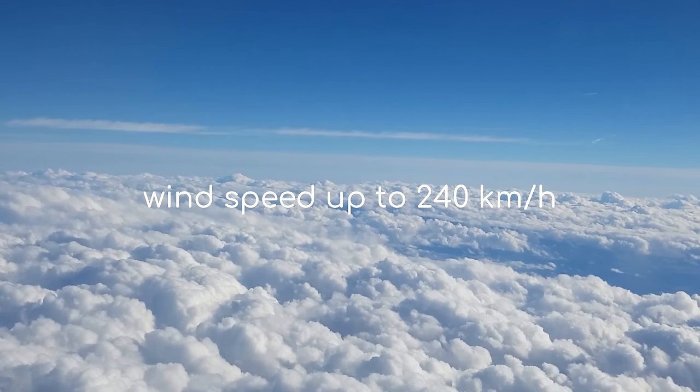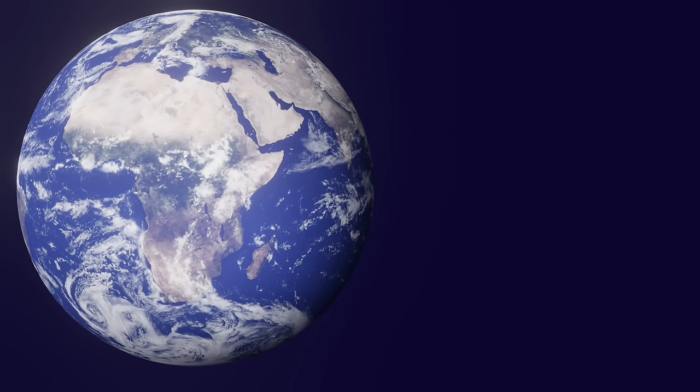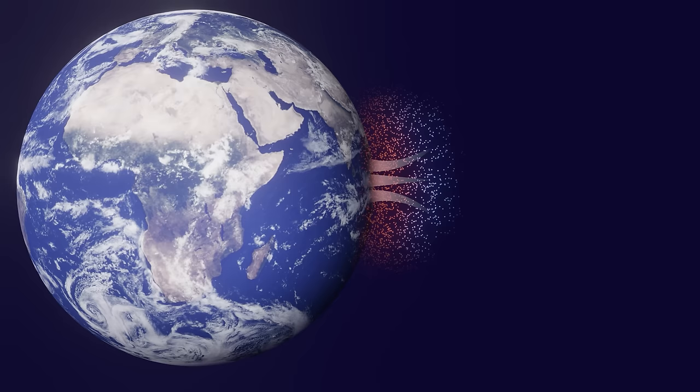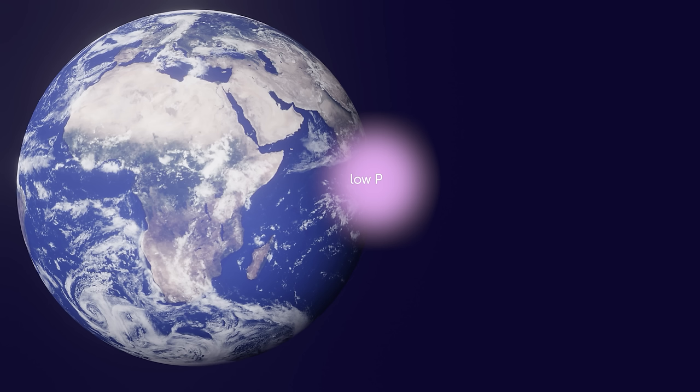Why do these winds happen? The first piece of the puzzle is temperature difference. At locations like the equator where sunlight is most concentrated, the air is warmed and starts to rise. As it does so, it creates an area of low pressure beneath it that draws air into it from its surroundings, like a giant vacuum cleaner.